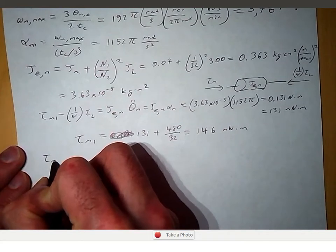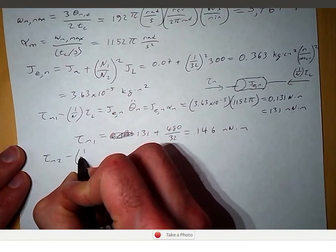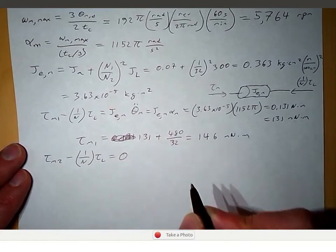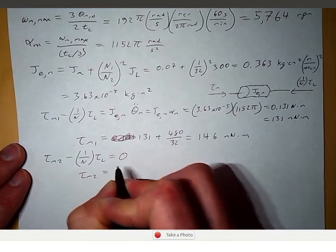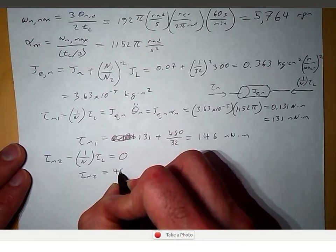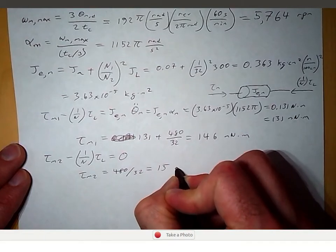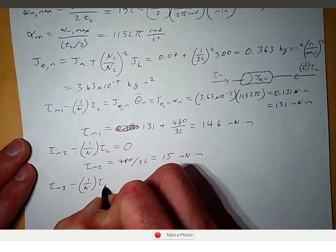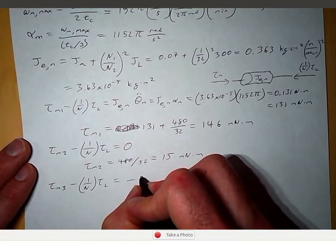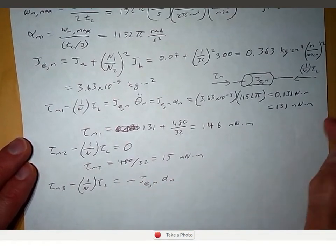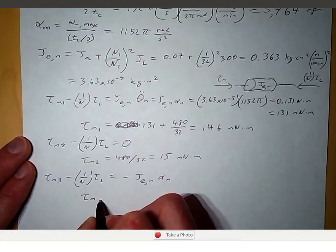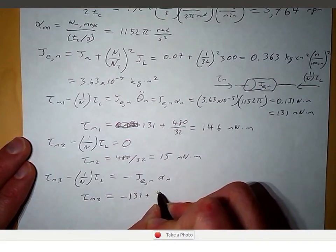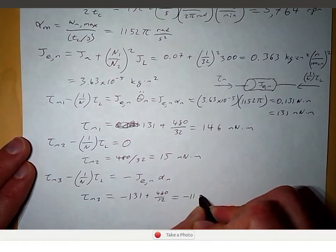For the second portion of the trajectory, the net torque on the equivalent moment of inertia is tau_M2 minus (1/N) times tau_L, equal to zero since there is no acceleration. So tau_M2 is 480 divided by 32, which is 15 millinewton-meters. For the third portion, the motor is decelerating, giving tau_M3 as the difference between negative 131 and 480 over 32, resulting in negative 116 millinewton-meters.